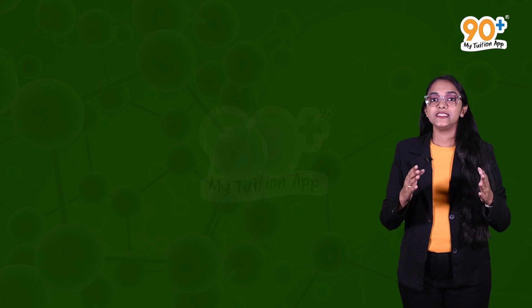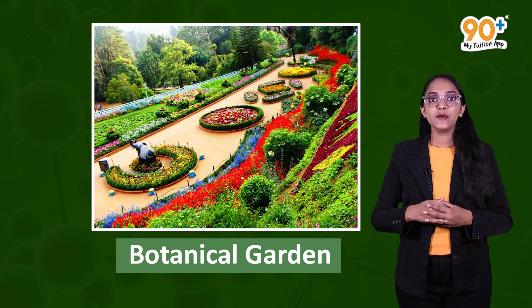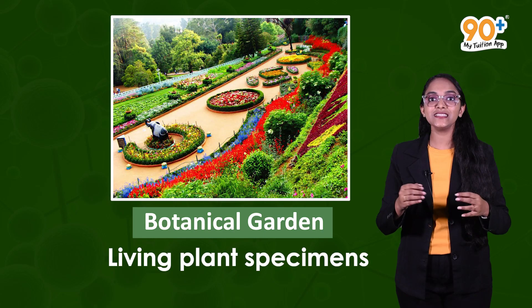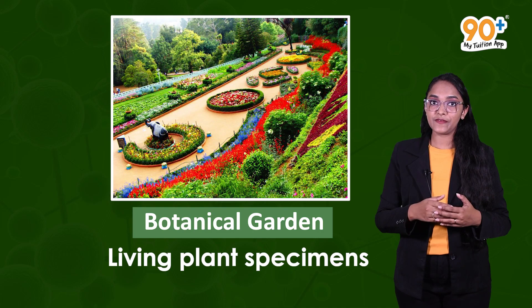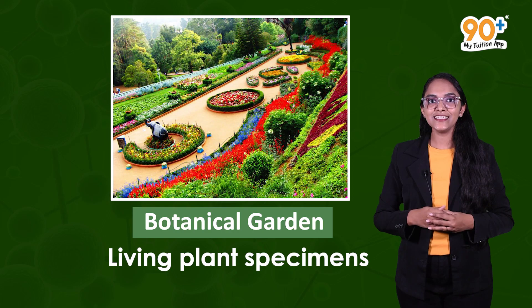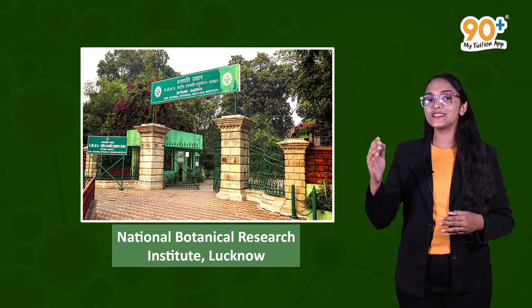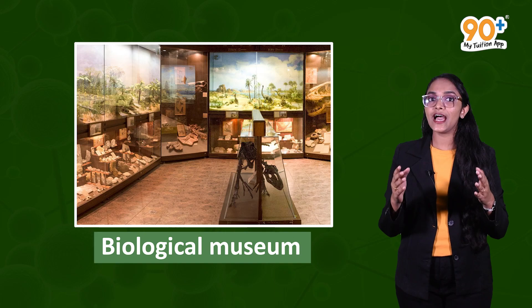If we know the system of classification, it is very easy to find the desired plant specimen — making herbarium a quick referral system. The next taxonomical aid is botanical gardens. While herbariums are for dried plant specimens, botanical gardens are for living plant specimens, preserved for identification purposes, labeled with their scientific names and families. Kew Garden in England is one of the most famous botanical gardens. In India, we have the Indian Botanical Garden at Howrah and the National Botanical Research Institute at Lucknow.